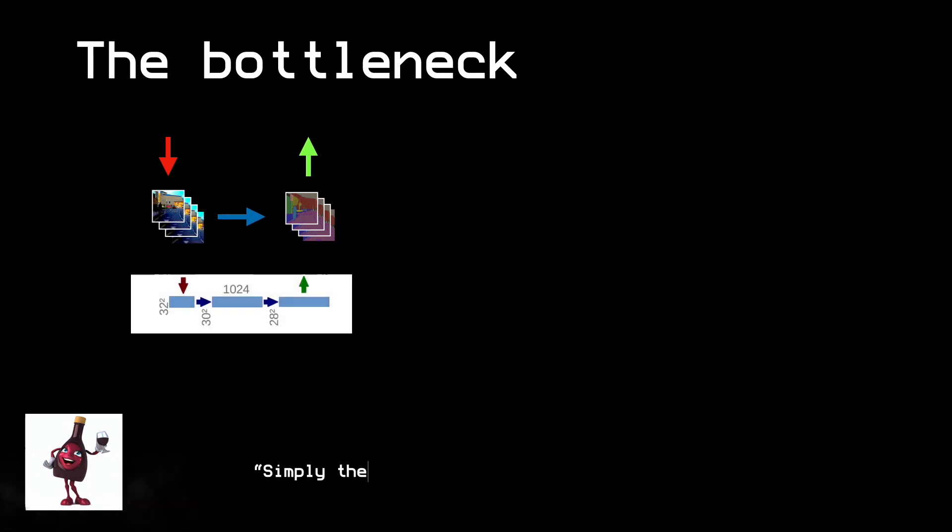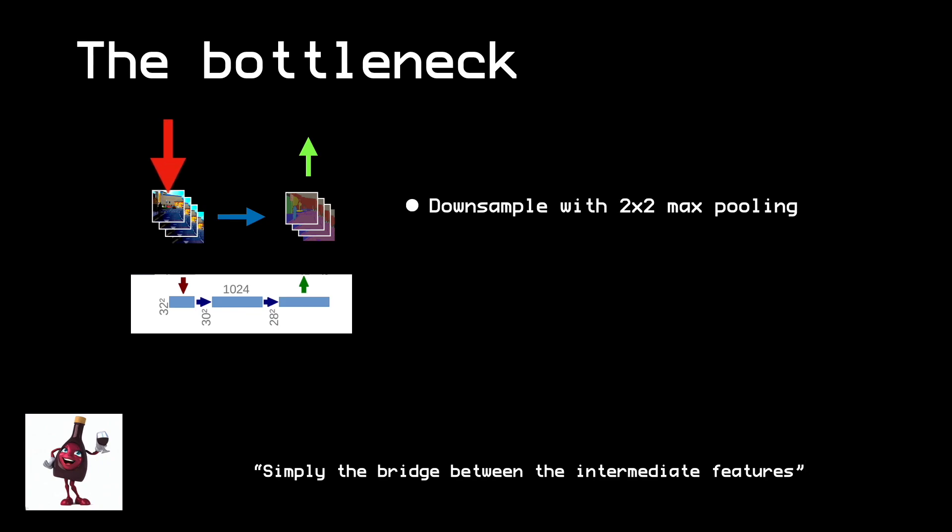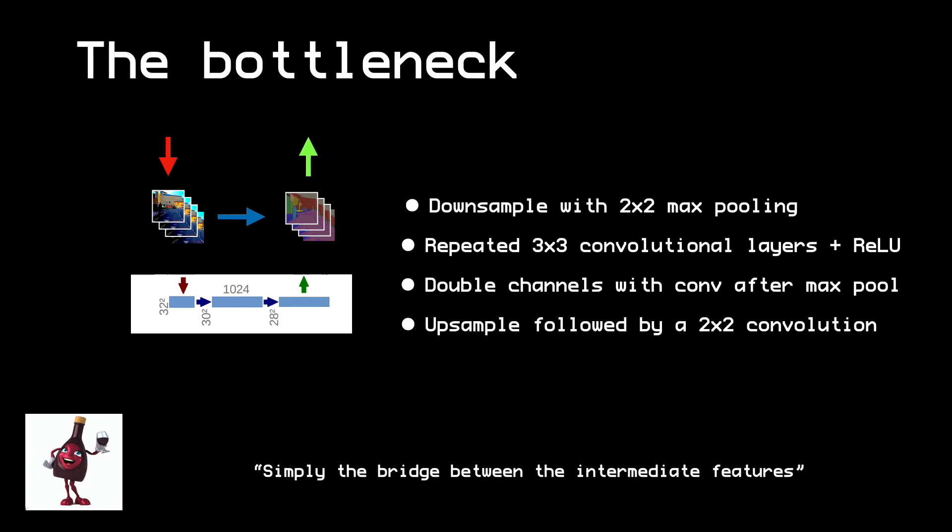Now let's have a look at the bottleneck, the bridge between the intermediary features of the network. This is where the encoder switches into the decoder. Firstly, we downsample the features. Then we pass them through the recognizable convolutional layers. Before finally upsampling them again to their previous resolution.